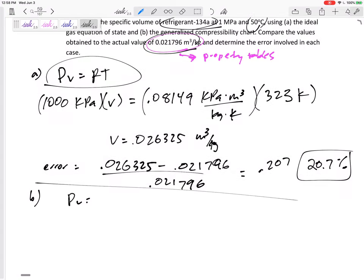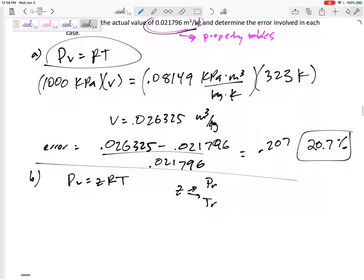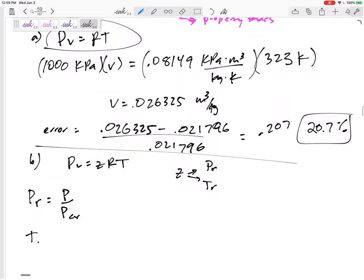I can say PV equals ZRT. But what is Z? I can get Z by taking the PR and the TR. So let's come down here and make a side note. The PR is P over P critical. The TR is T over T critical.